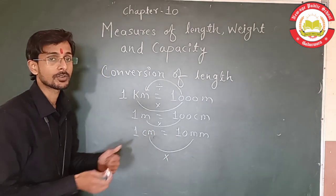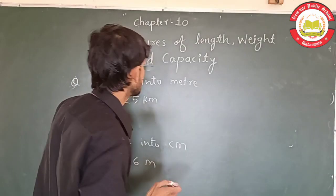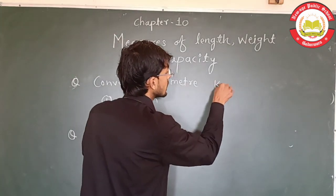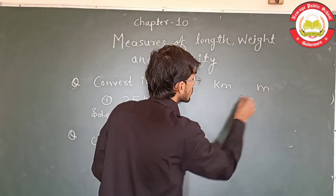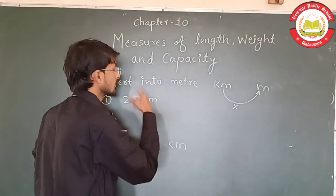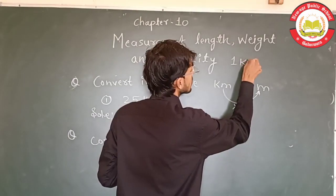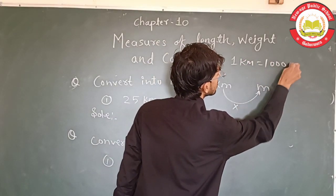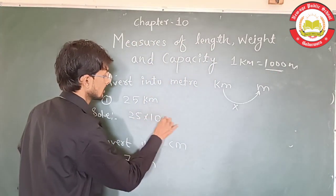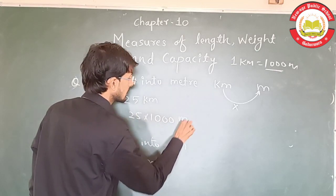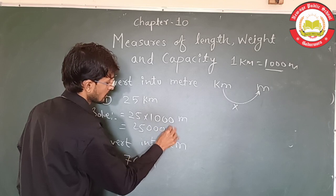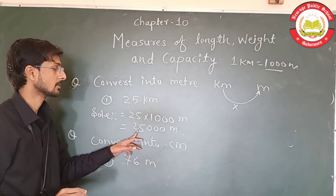Now we will start the exercise. The question is: convert 25 kilometers into meters. We know that 1 km equals 1000 meters, so we multiply 25 by 1000, giving us 25,000 meters. So the answer is 25,000 meters.